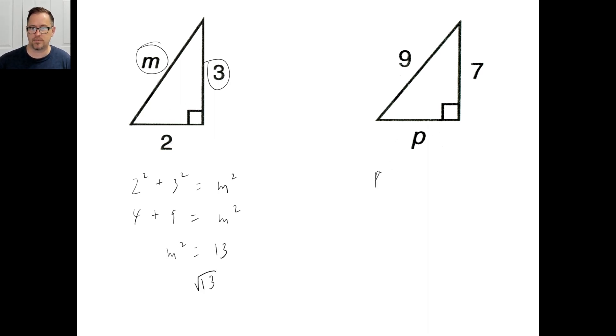Pause it and try the second one. Well the formula is p squared plus 7 squared equals 9 squared. So p squared plus 49 equals 81. Holy Moses, how did this thing show up again? That was completely random. Anyway, p squared is going to be 81 minus 49, which is 32. So p is going to be the square root of 32. There you go. That's the Pythagorean theorem.